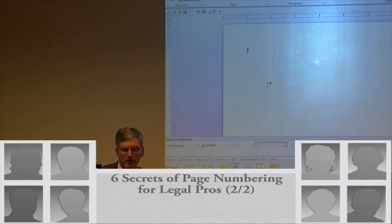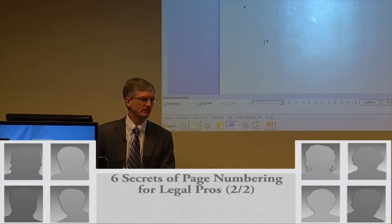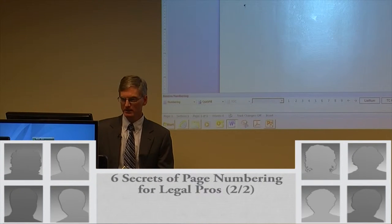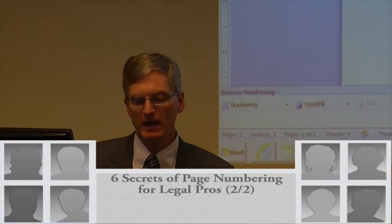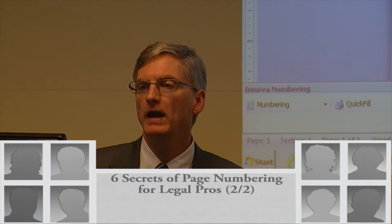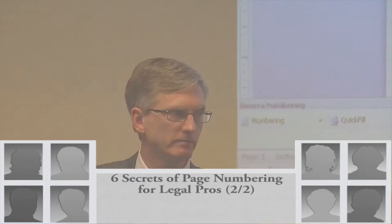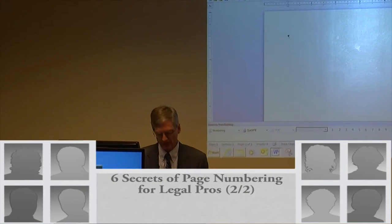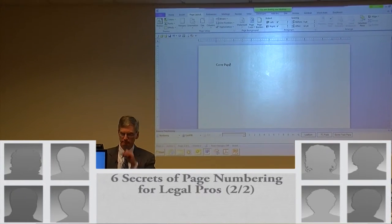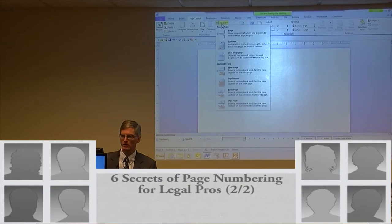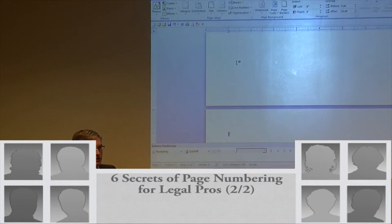Step number one: I'm going to section my document by typing some text and inserting section breaks. Section breaks were a little hard to find — they're on the Page Layout tab, in the Page Setup group, under Breaks. There is your Next Page section break. Section one is just going to be the cover page, so I put 'cover page' and then insert a section break by clicking Breaks and choosing Next Page. Now it says section two.